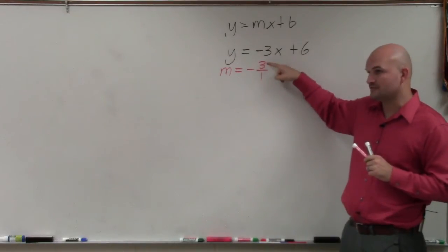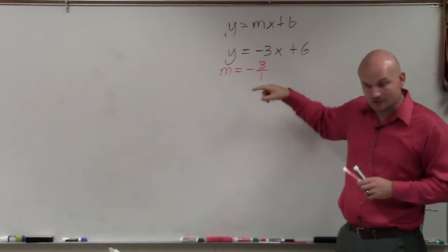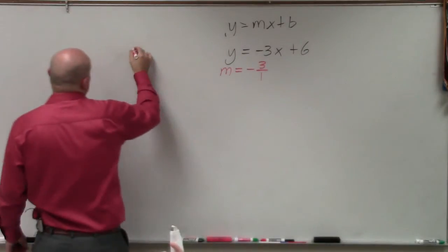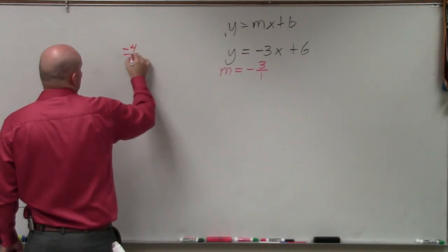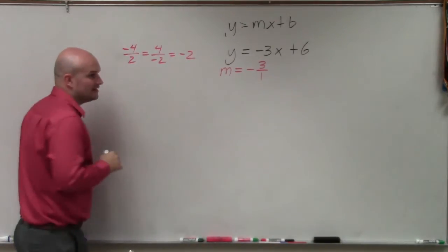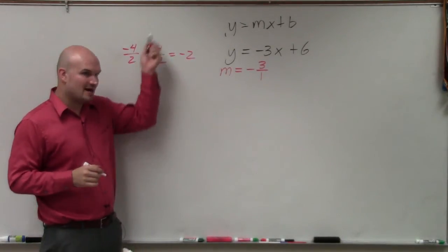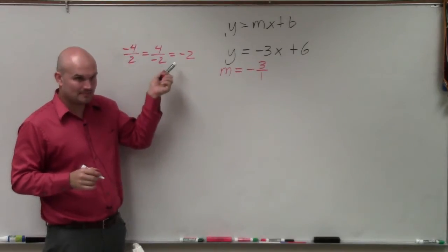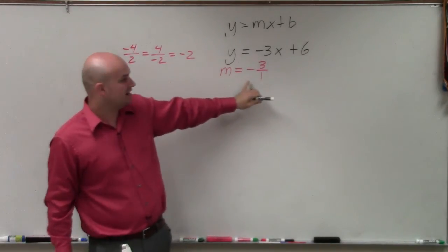Now, a lot of students say, well, the negative's in front. Should the negative go above or the negative go below? And my response to that is it doesn't matter. Negative 4 over 2 is equal to 4 over negative 2, which is equal to negative 2. Do you guys agree? It doesn't matter if the negative's up top or bottom. That's all just going to depend on how you guys want to graph.